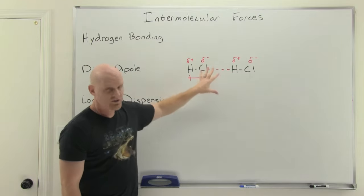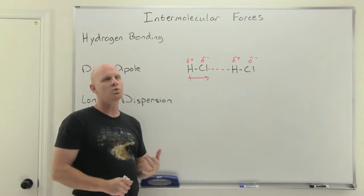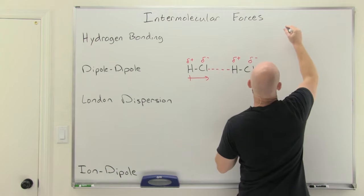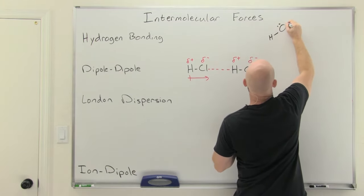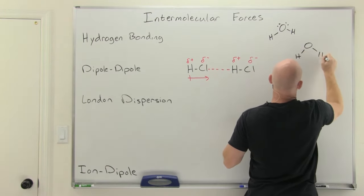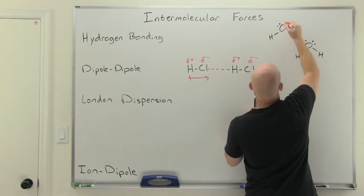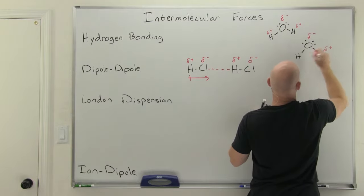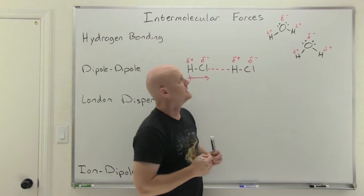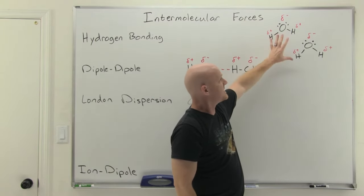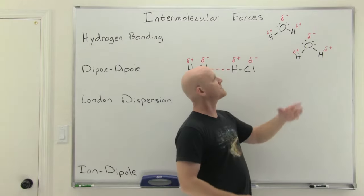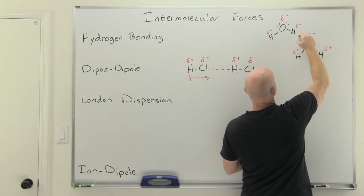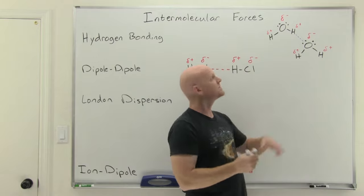Hydrogen bonding is really nothing more than a super strong dipole-dipole force. The most famous molecule we see with hydrogen bonding is water. You've got partially negative oxygens and partially positive hydrogens, since those oxygen-hydrogen bonds are definitely polar. The interaction is mediated through one of the lone pairs on the oxygens — the interaction between the lone pair on the oxygen and that partially positive hydrogen is what we term hydrogen bonding.